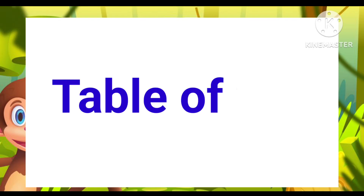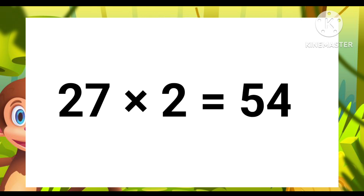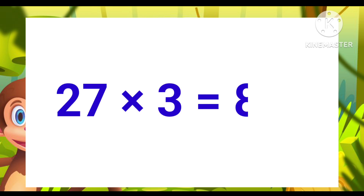Today we will learn the table of 27. 27 ones are 27. 27 twos are 54.